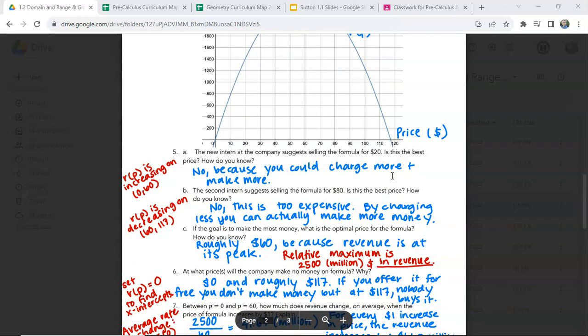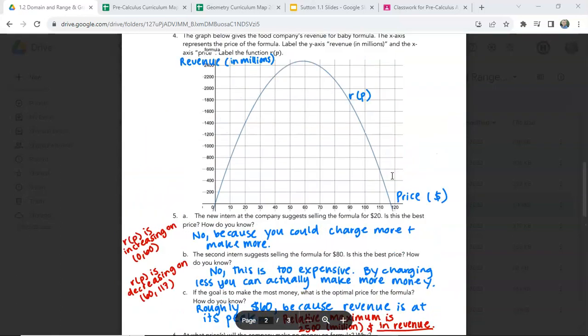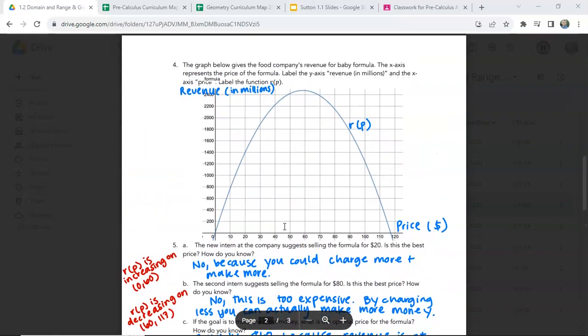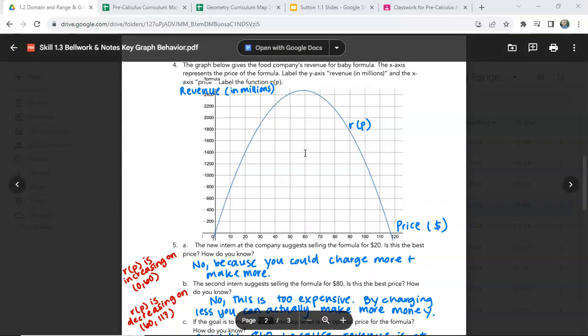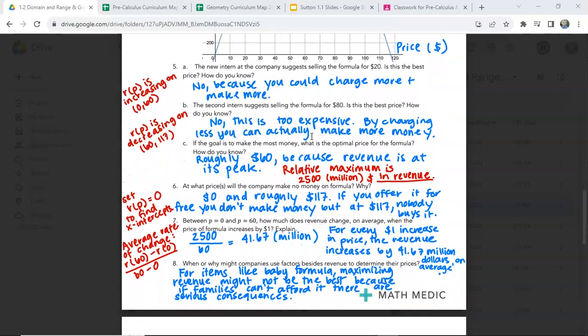The new intern at the company suggests selling the formula for $20. Is this the best price? So price $20. No, because the revenue is $1,400. Best price is going to be at $60. So $80, also not the best price. Too expensive. You're losing some customers. Roughly $60 is the best price. Because that has a relative maximum there at $2,500 million in revenue.